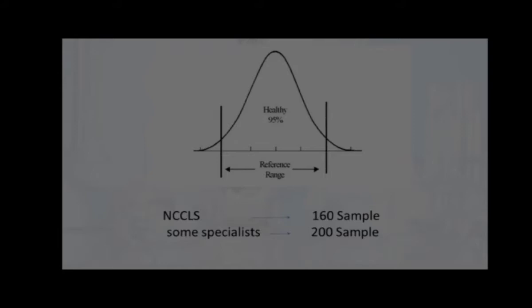NCCLS or the National Committee for Clinical Laboratory Standards recommended to choose at least 120 samples, and some specialists recommended at least 200 samples of healthy people for determination of normal range.